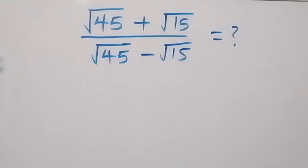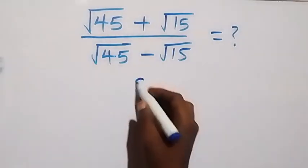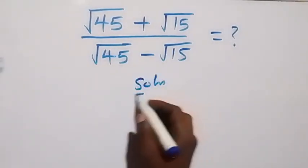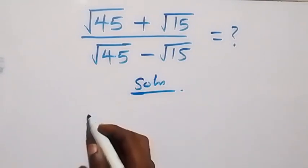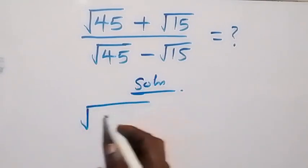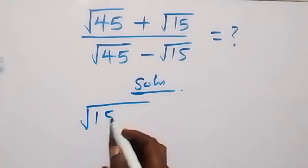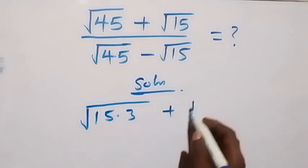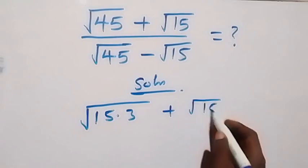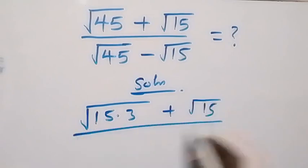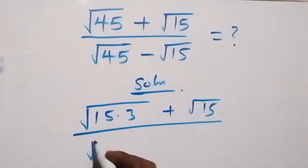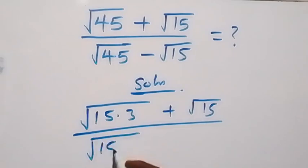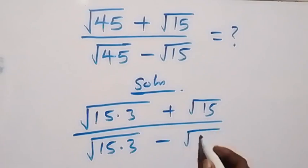Hello y'all, welcome. How to solve this nice math problem involving square root. From here, you can reduce this and write root 45 as root 15 times 3, then plus we have root 15 here, then divided by — also here we have root 15 times 3, and here we have root 15.